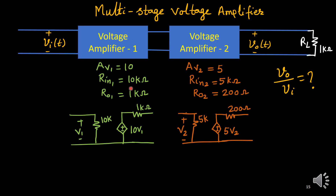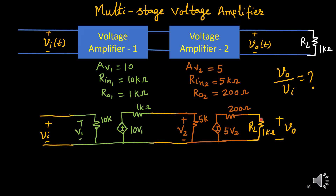We replace each voltage amplifier with its model. For A1: input impedance 10 kΩ, dependent source 10 times V1, and output resistance 1 kΩ in series. For A2: input resistance 5 kΩ, dependent source 5 times V2, and output resistance 200 Ω. They are cascaded one after another, and load RL of 1 kΩ is connected at the output. The voltage V0 is the output voltage across the load.